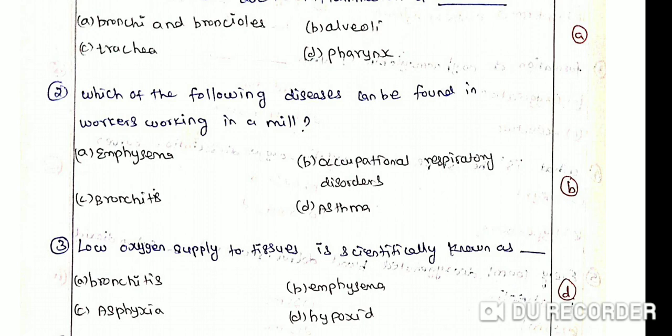The correct answer is option B, occupational respiratory disorders. In industries, produced dust cannot be coped up by the different systems of human body. Long and continuous exposure gives rise to inflammation leading to fibrosis and thus leading to severe lung damage.